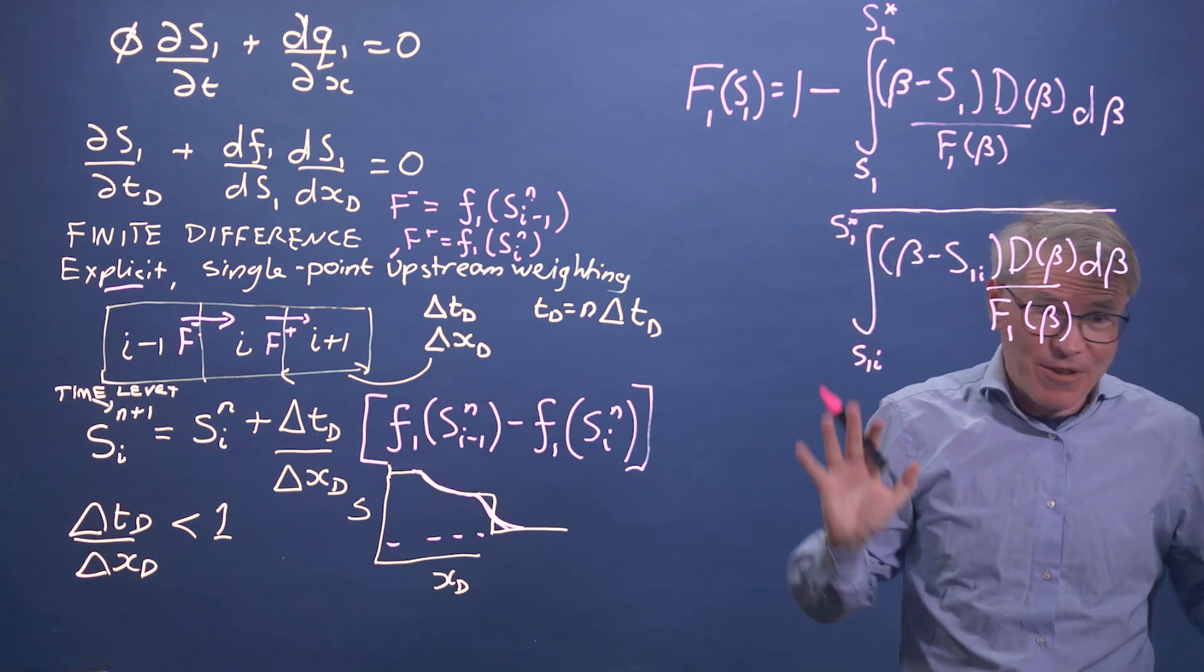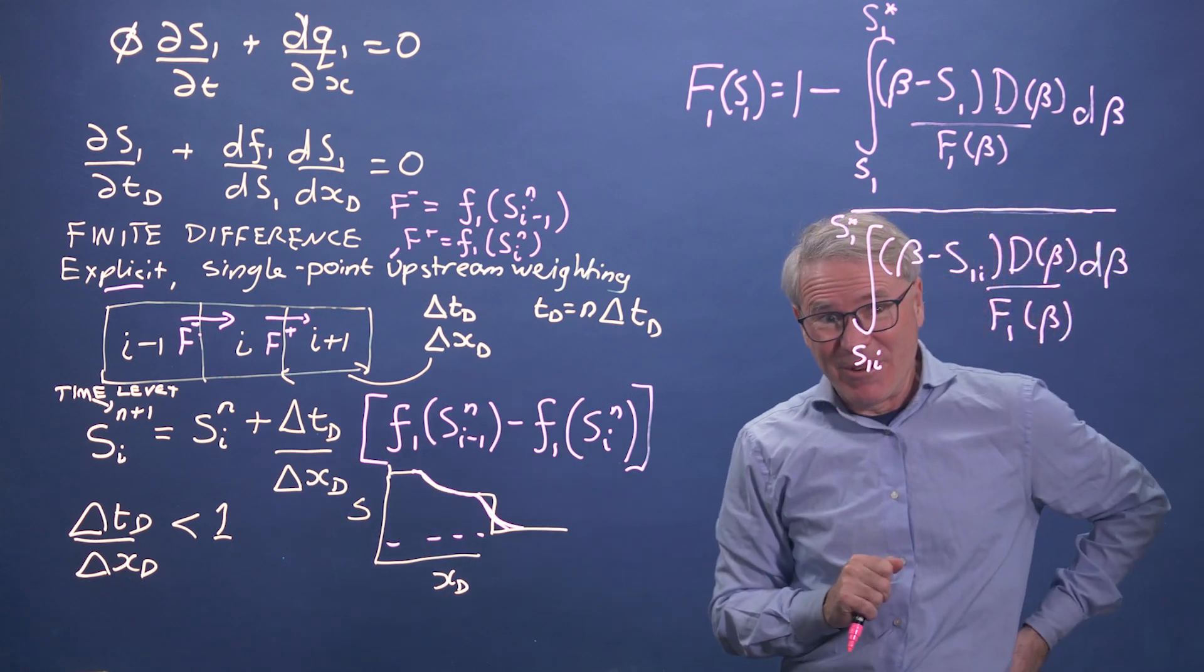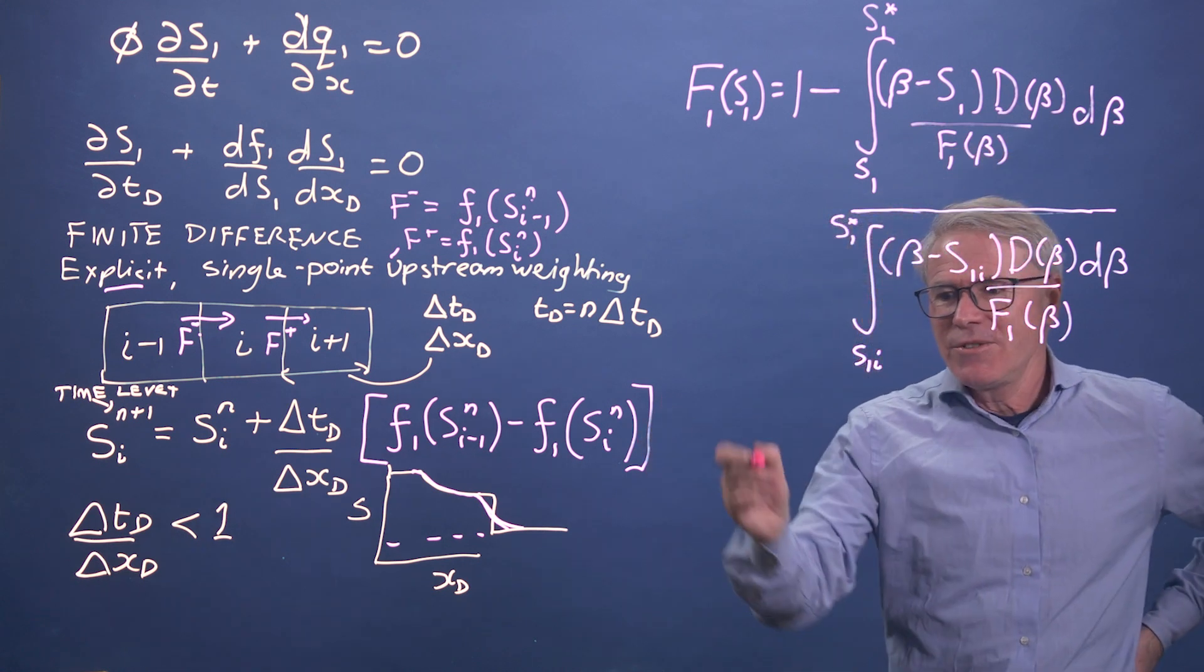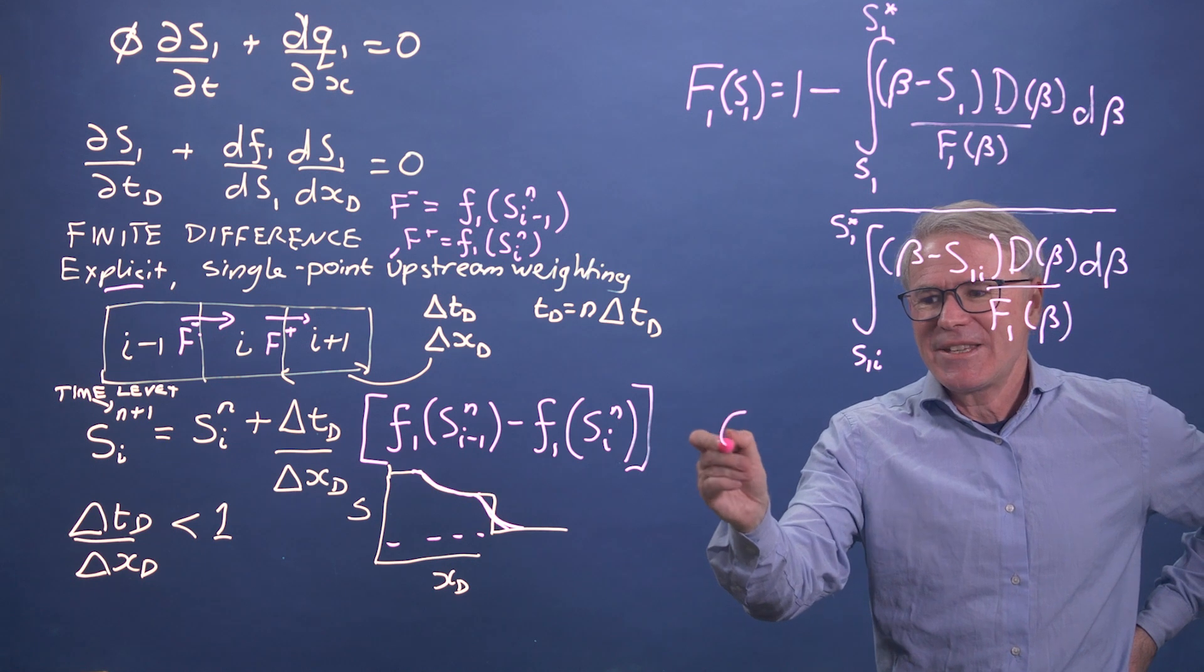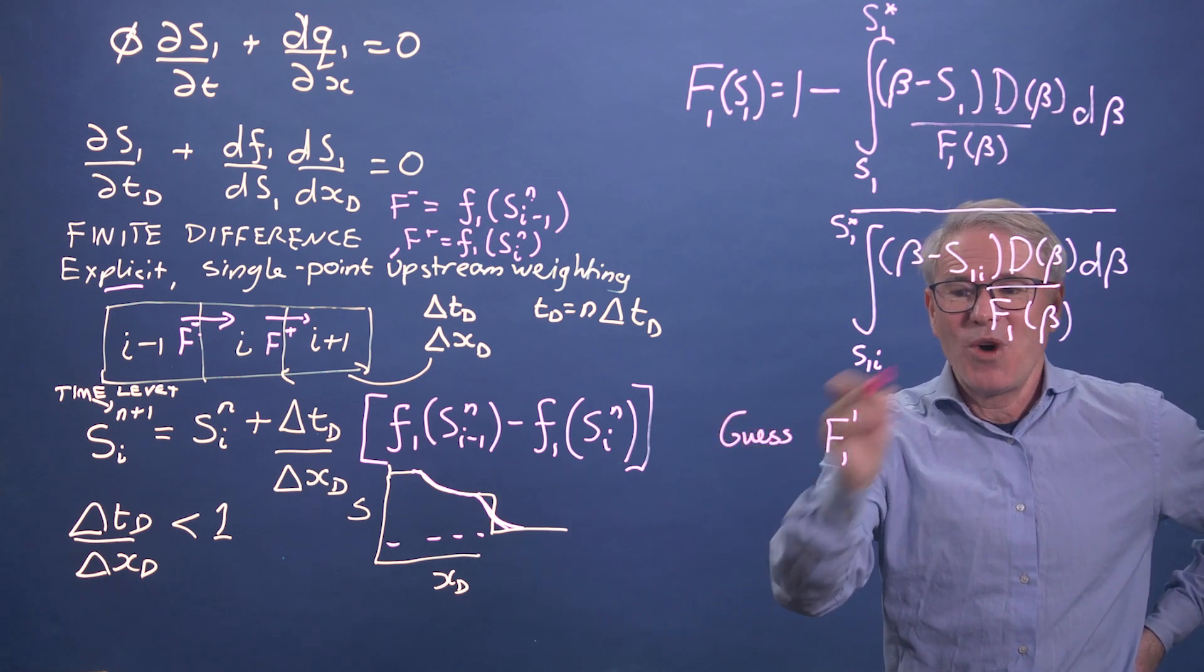times d of beta d beta over f1 of beta. So this is basically the integral all the way to the initial conditions. So how might we evaluate this? Numerically, I'm not going to go through numerical integration. It's really standard. You simply area under the graph for known functions. But we do have to iterate with f1. So what we do is we guess,